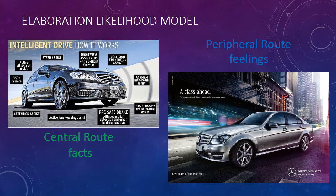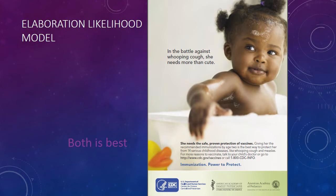These ads are examples of a central route ad and a peripheral route ad. When you combine both elements into an ad, that's best. In this ad, you have peripheral route — you have positive feelings because that's a pretty adorable baby. It also has central route because there are facts talking about protecting her from childhood diseases by giving her a vaccine. So this ad uses both peripheral route and central route to deliver its message.